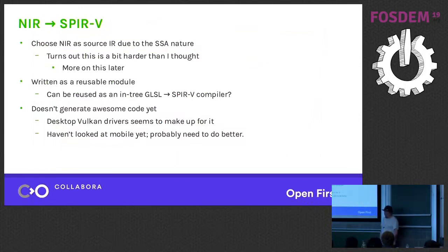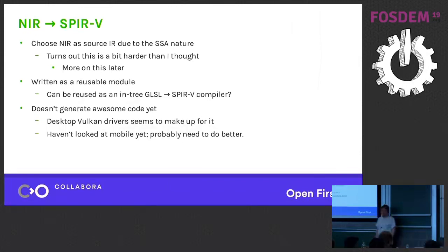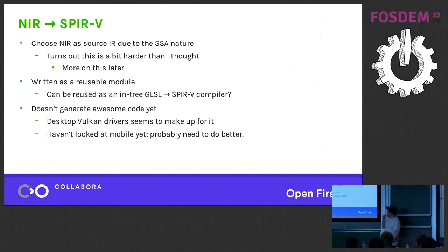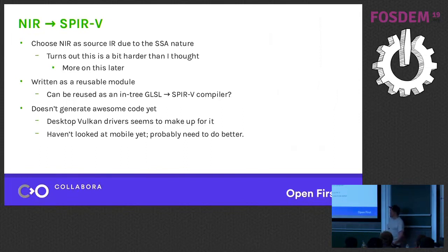We're doing the shader work with NIR, which is an SSA-based compiler IR in Mesa. We translate that into SPIR-V, which is the Vulkan shader IR. I chose that direction rather than something like TGSI, mostly because SSA to SSA seemed like a great fit — though it turns out to be a little bit harder than I thought because of some annoying differences in how they treat fundamental SSA constructs. It's written as a reusable module, hopefully similar to how we currently have a SPIR-V to NIR. I'm hoping we can make an end-to-end GLSL all the way to SPIR-V compiler in Mesa. The code generated is not awesome, but desktop Vulkan drivers make up for the bad code by optimizing it afterwards. I fear this won't fly on mobile, since mobile drivers are probably less eager to spend CPU time optimizing first.